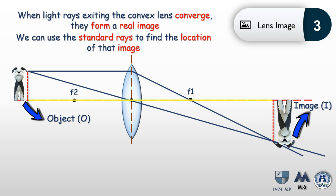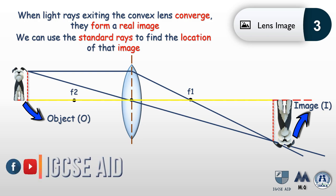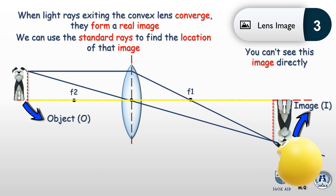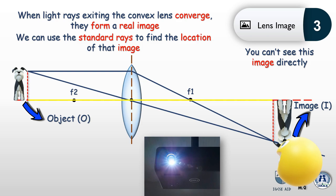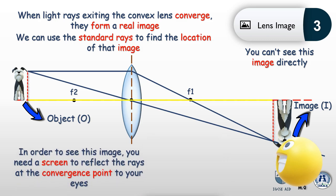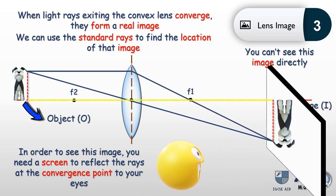This image is real. That means we cannot see it directly — if we placed our eyes in the path of the rays, we would only see bright light, like placing your eyes in front of a projector. To see this image, you need a screen placed at the convergence point. As light rays hit the screen's surface, they reflect towards the eye — that is how you observe a real image. A screen is required because it is a real image.